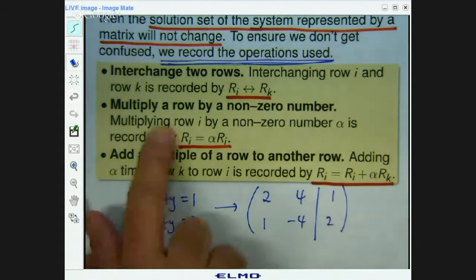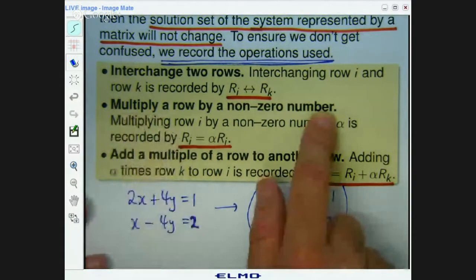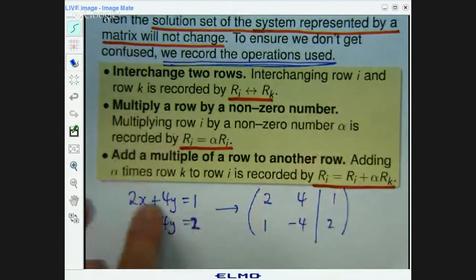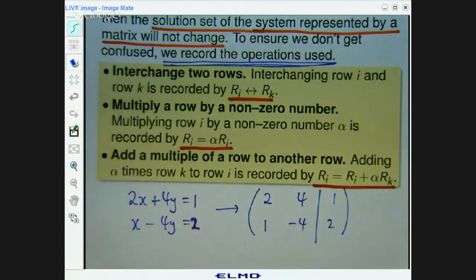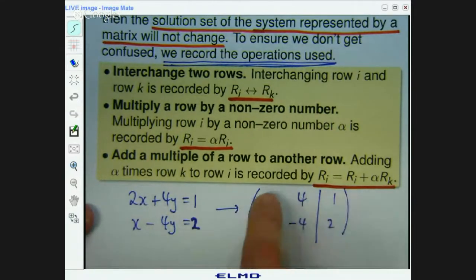Okay. All right. What about this one? Multiply a row by a non-zero number. Okay. If I take this equation here and I multiply both sides by 2, I'll get 4x plus 8y equals 2. That's the same equation as this one. I haven't changed it at all. So that means I can multiply this row by 2 and you get 4, 8, and 2. Well, this row by 2.